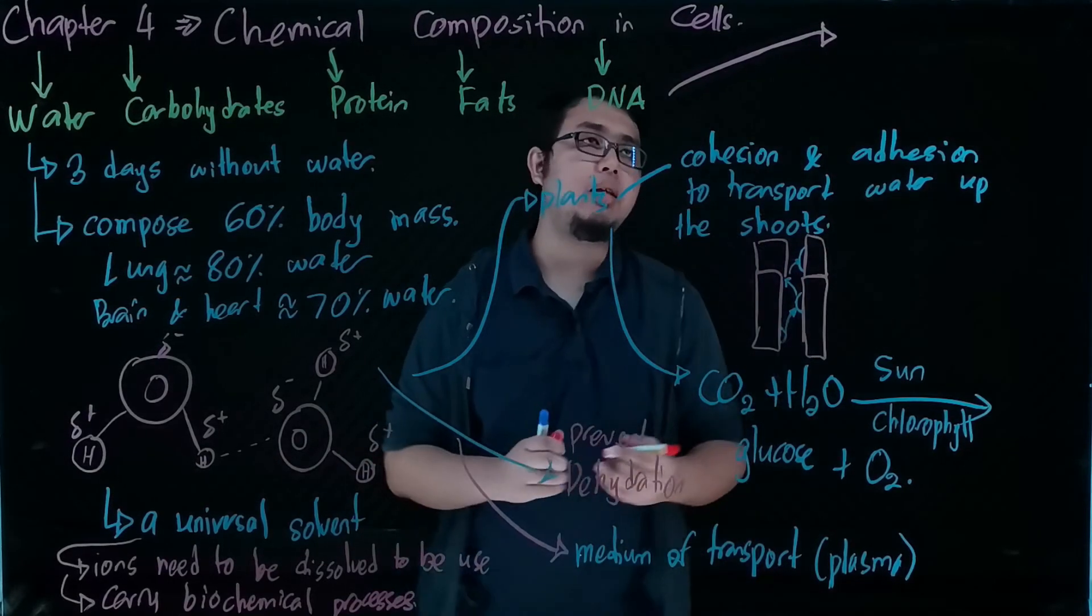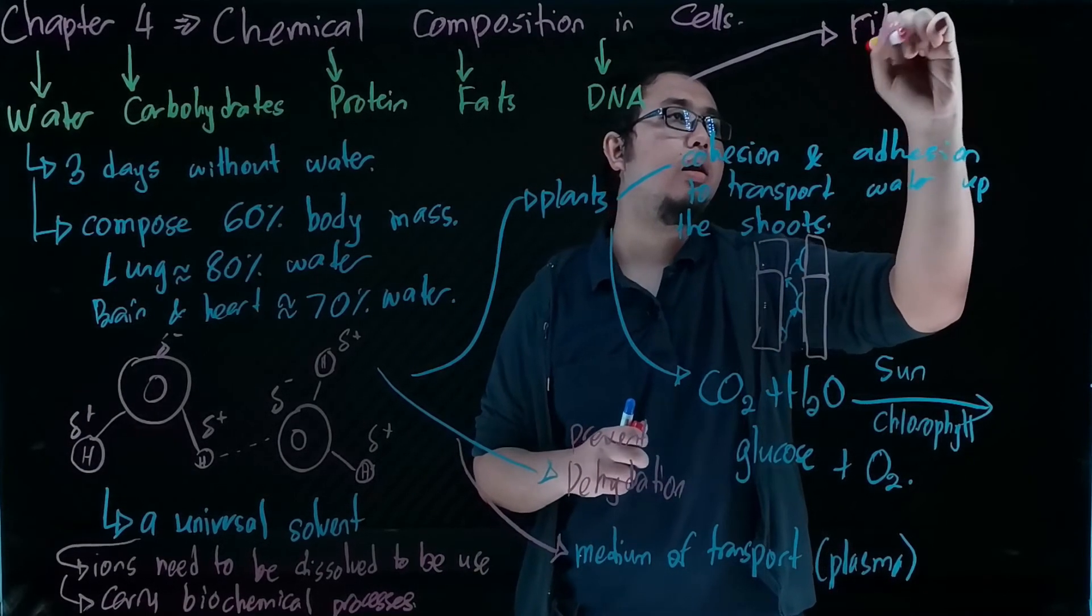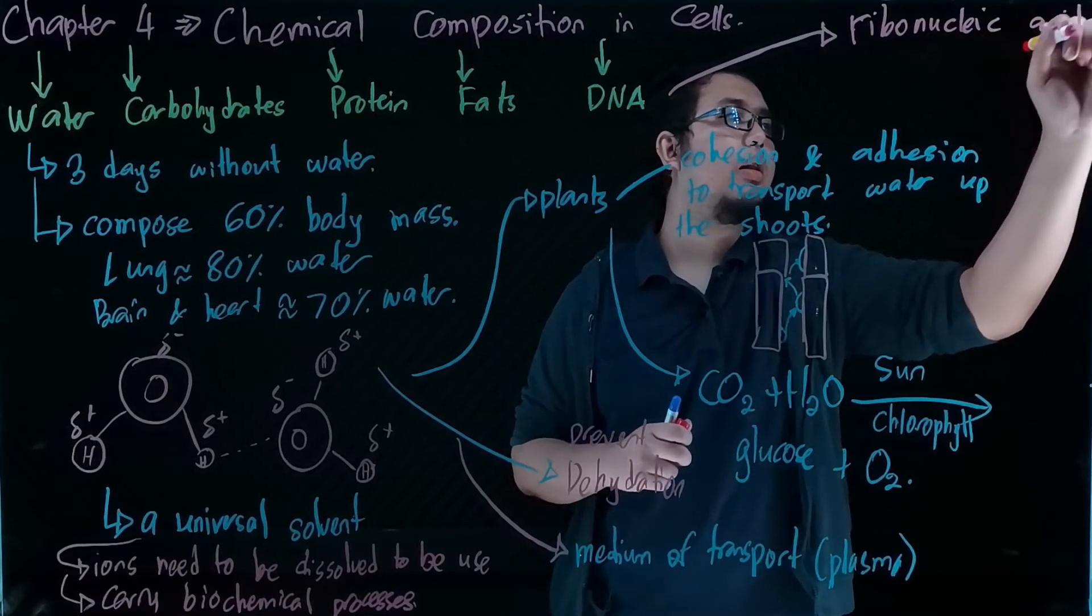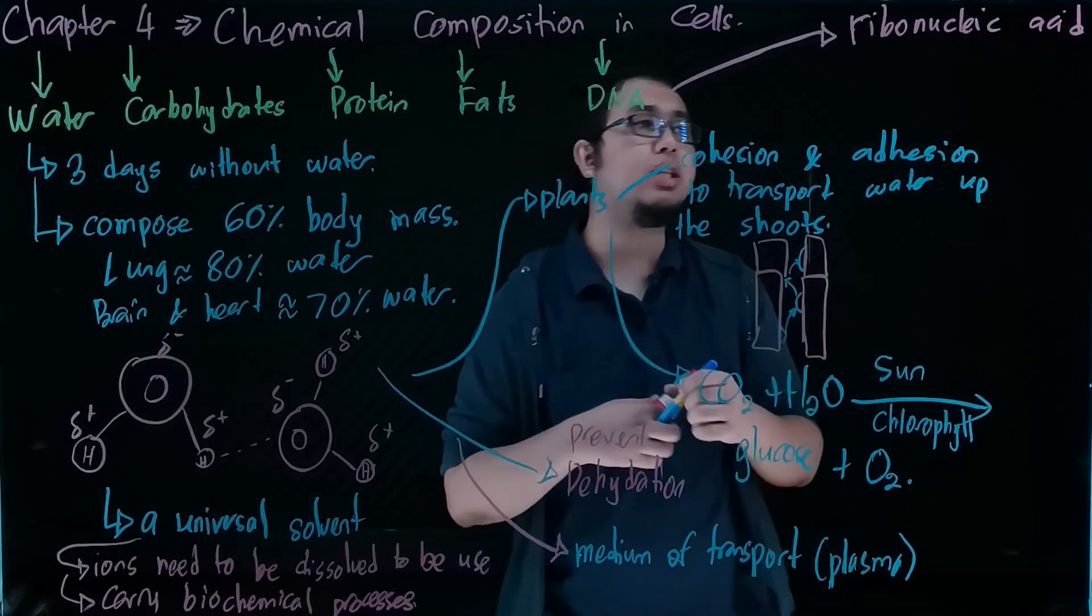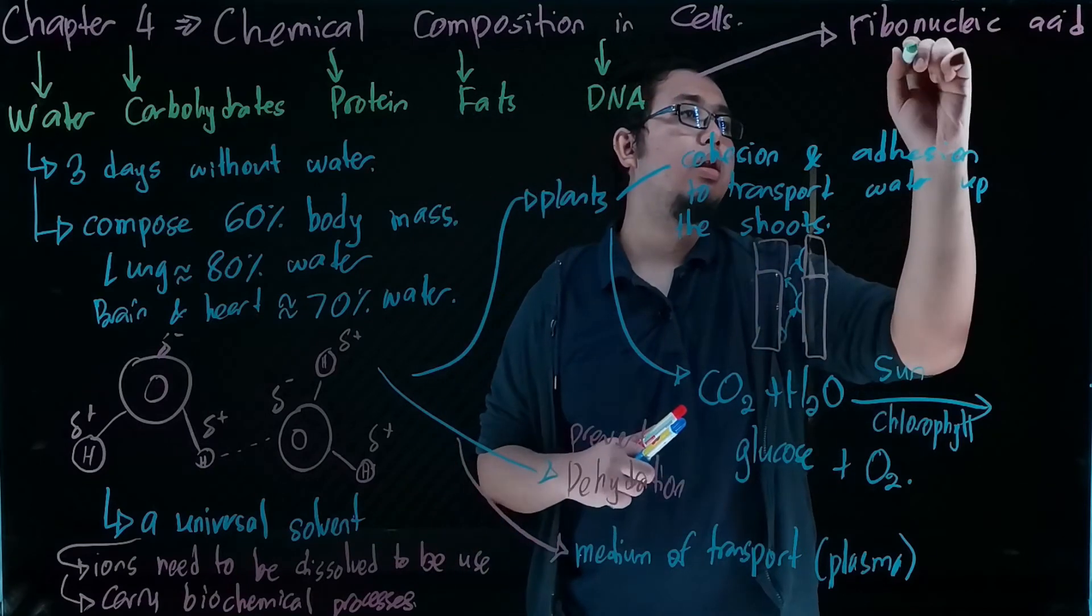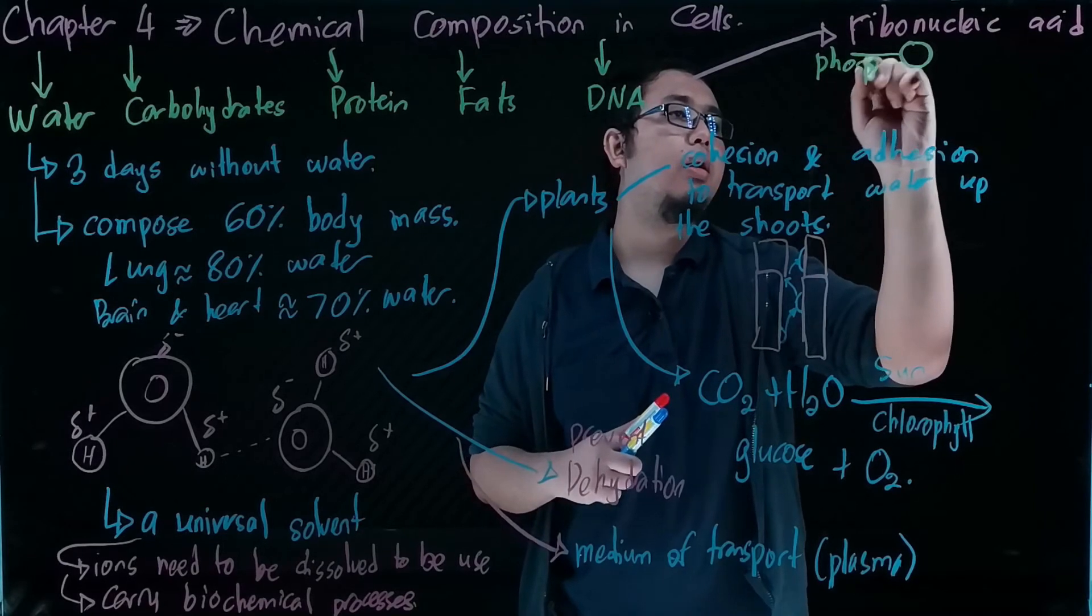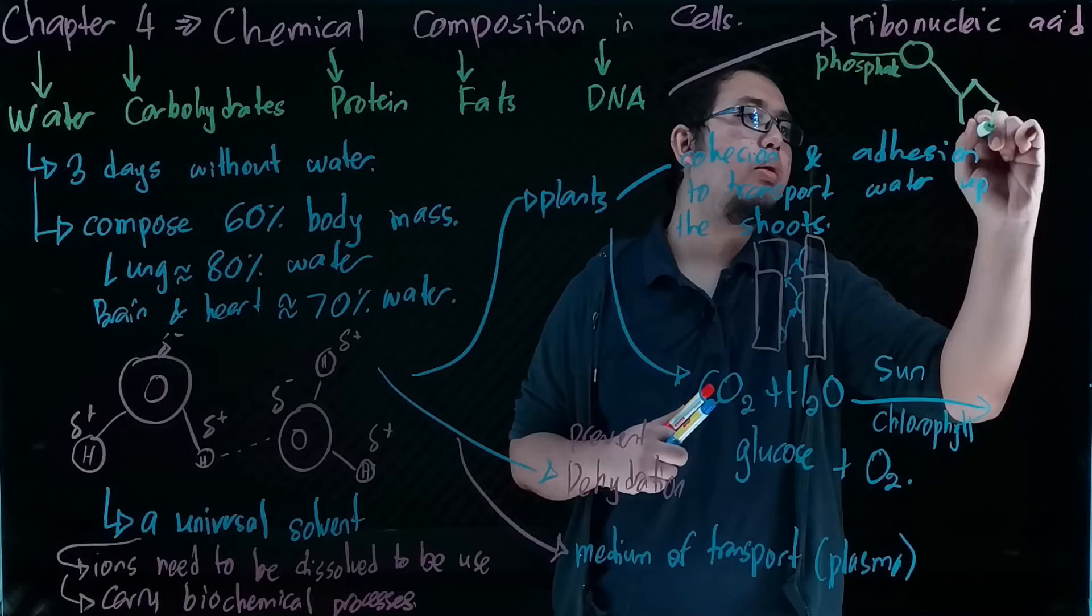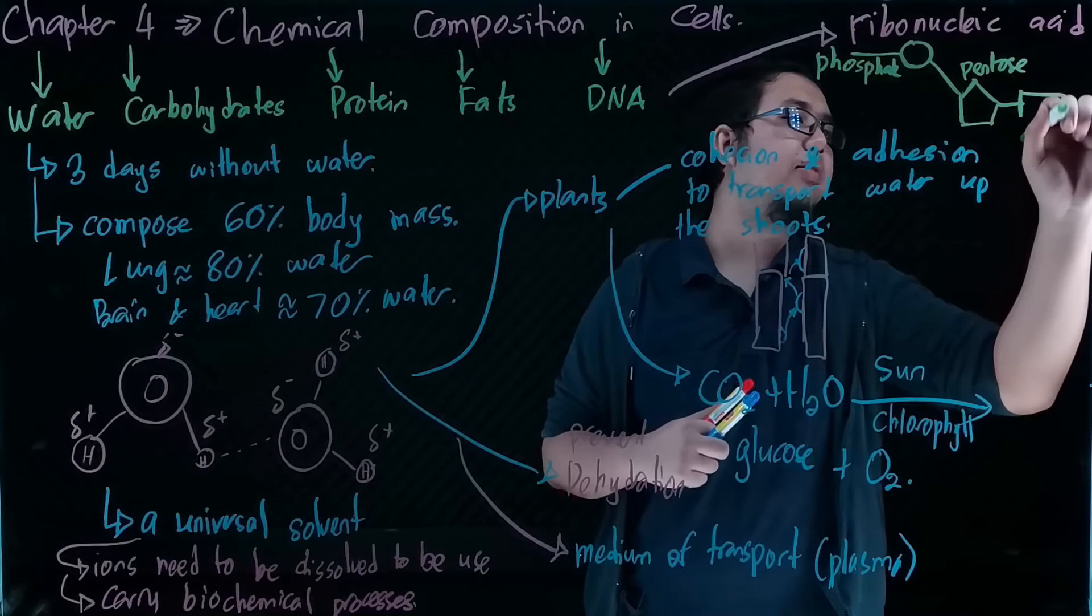Next, let's go to DNA. A DNA subunit is called ribonucleic acid. A ribonucleic acid consists of three main components: phosphate, pentose sugar, and a nitrogenous base.